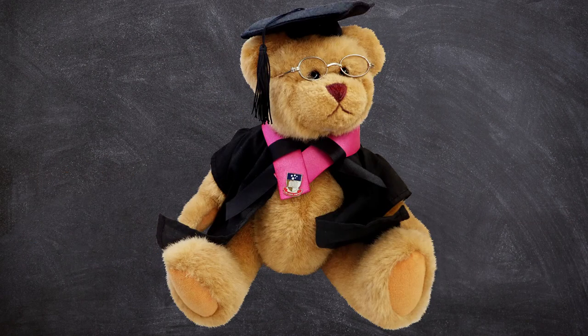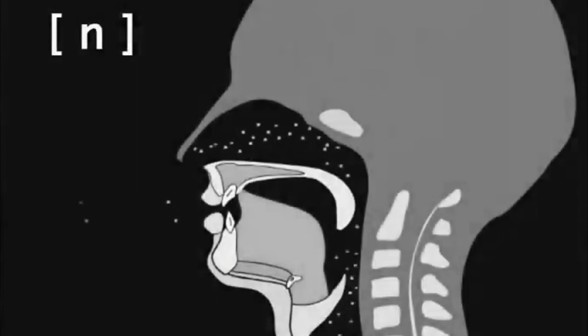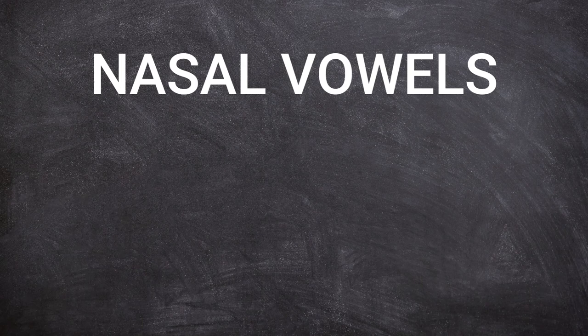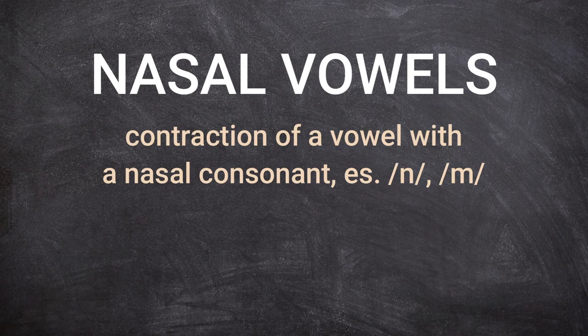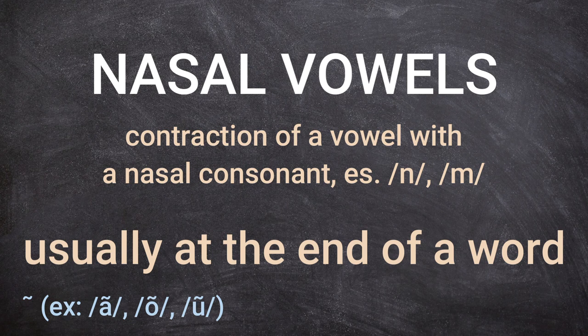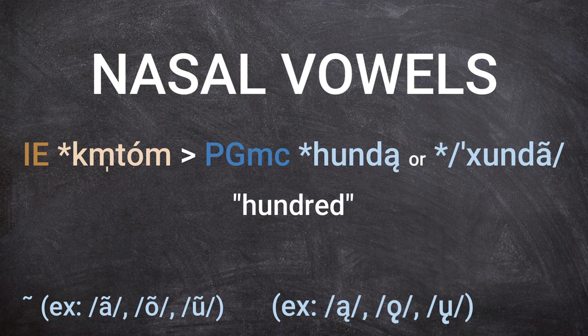Scholars agree that Proto-Germanic developed nasal vowels — a vocalic feature not clearly present in the Indo-European reconstruction. Nasal vowels are produced by letting air flow through both the mouth and the nose simultaneously. These are usually just the contraction of a vowel with a nasal consonant N or M, found 90% of the time at the end of words, and they disappeared completely in modern Germanic languages. An example already seen is IE *ḱm̥tóm becoming Proto-Germanic *hundam.